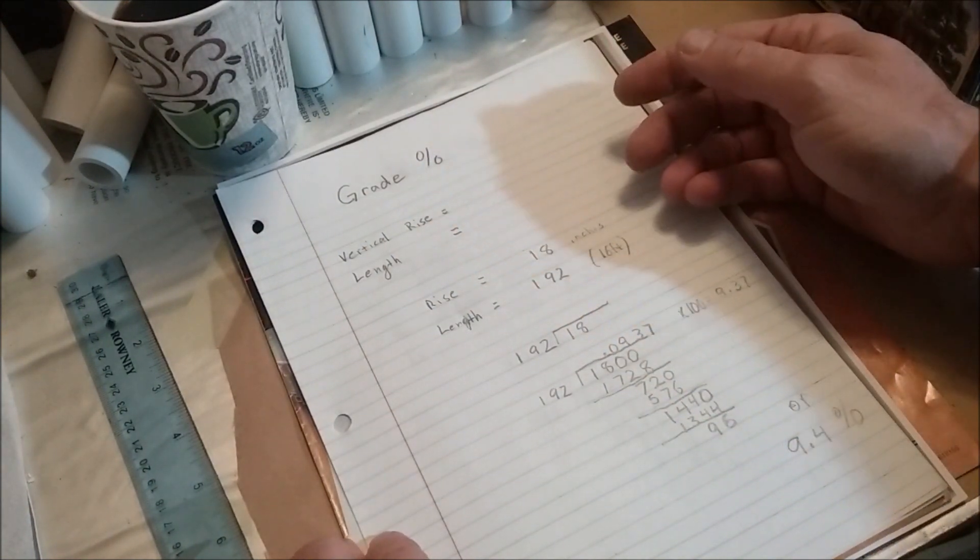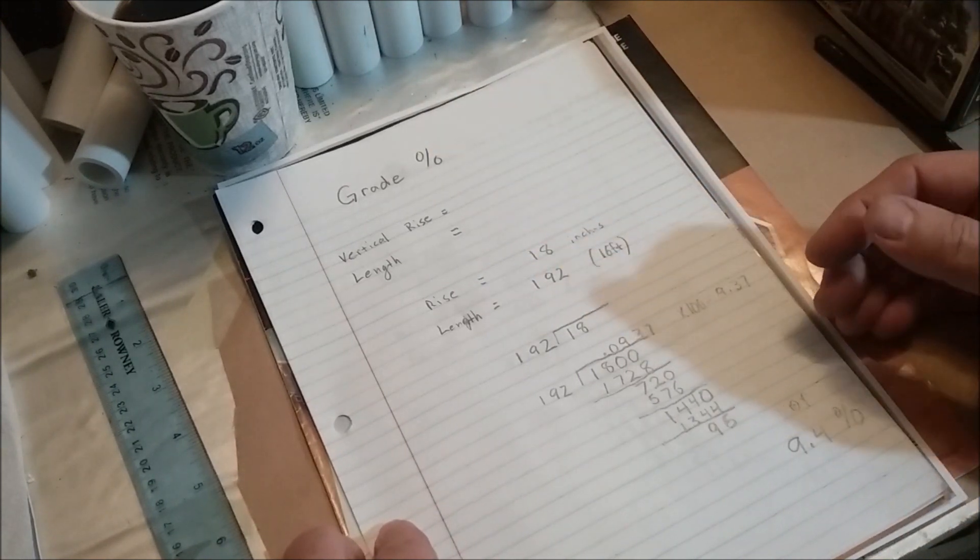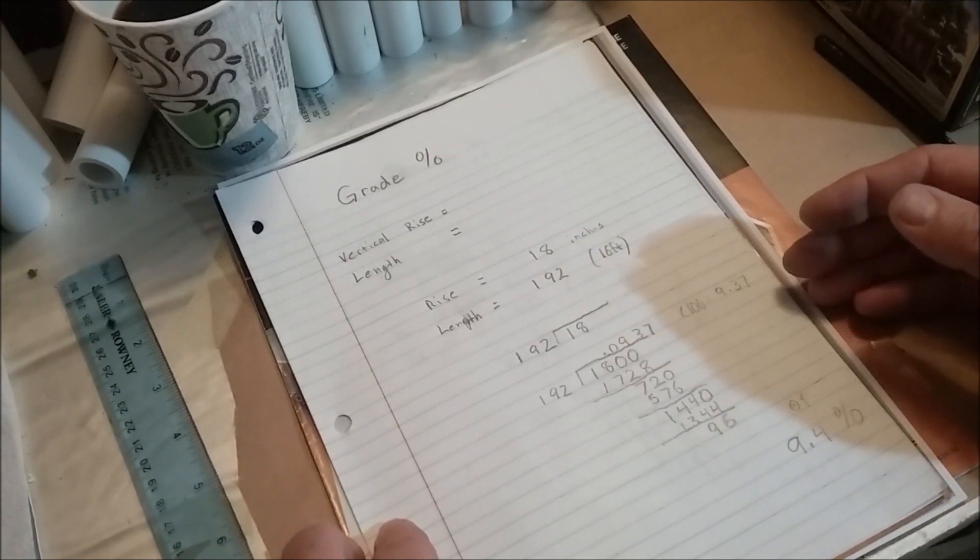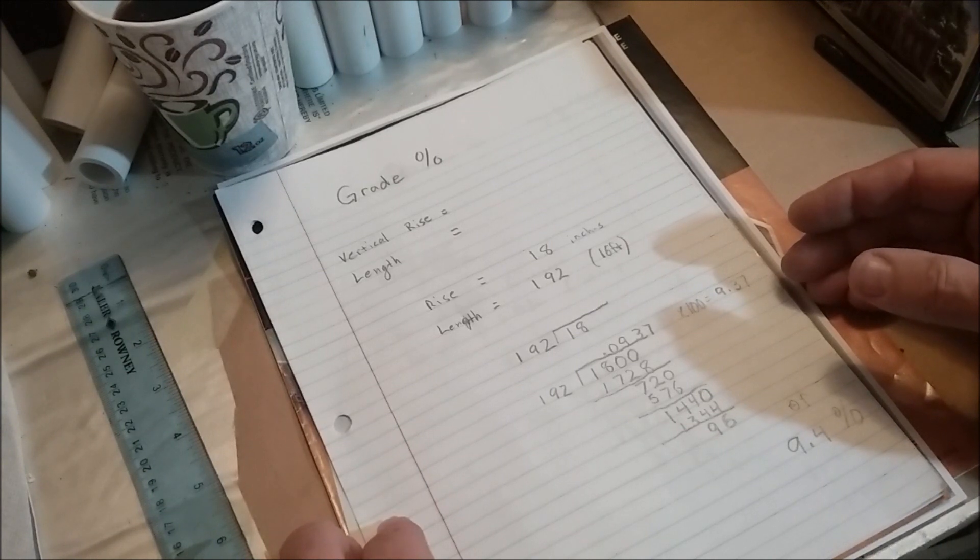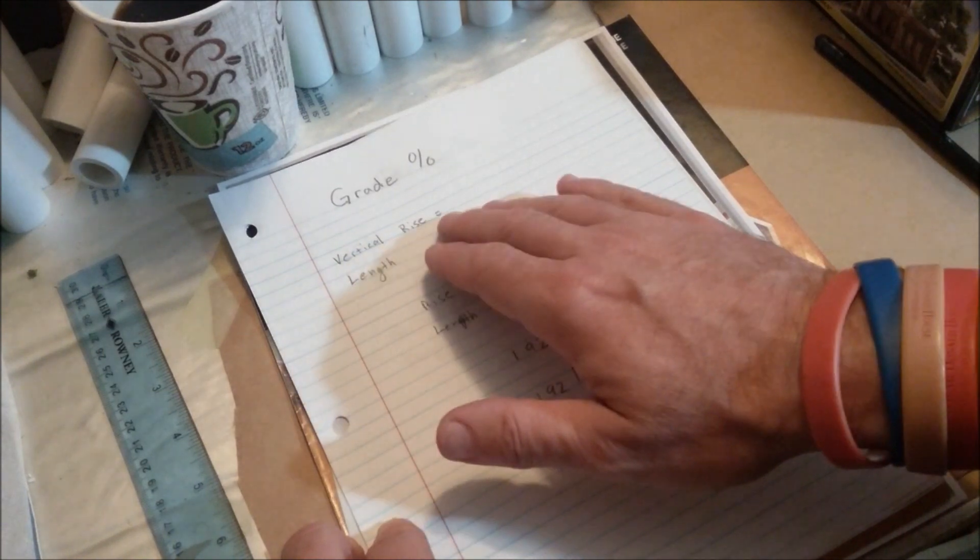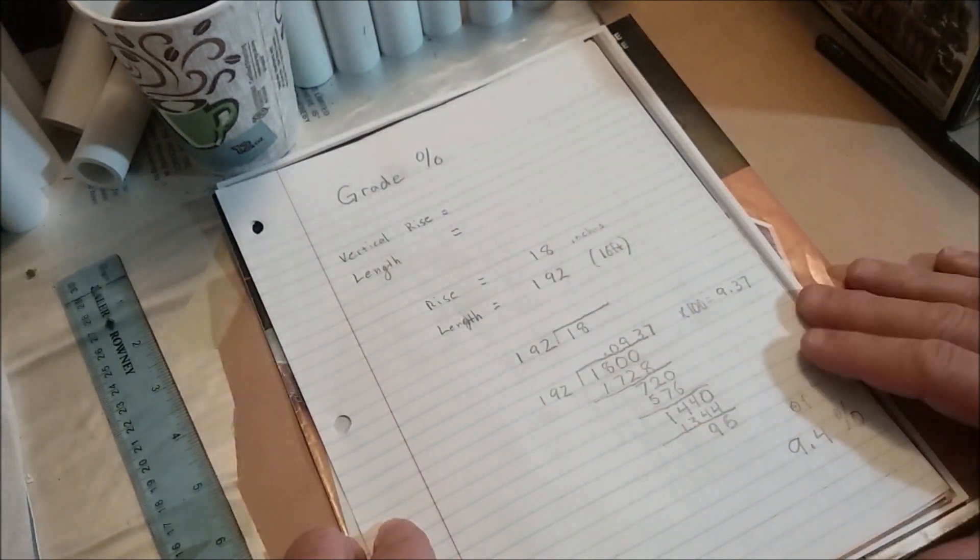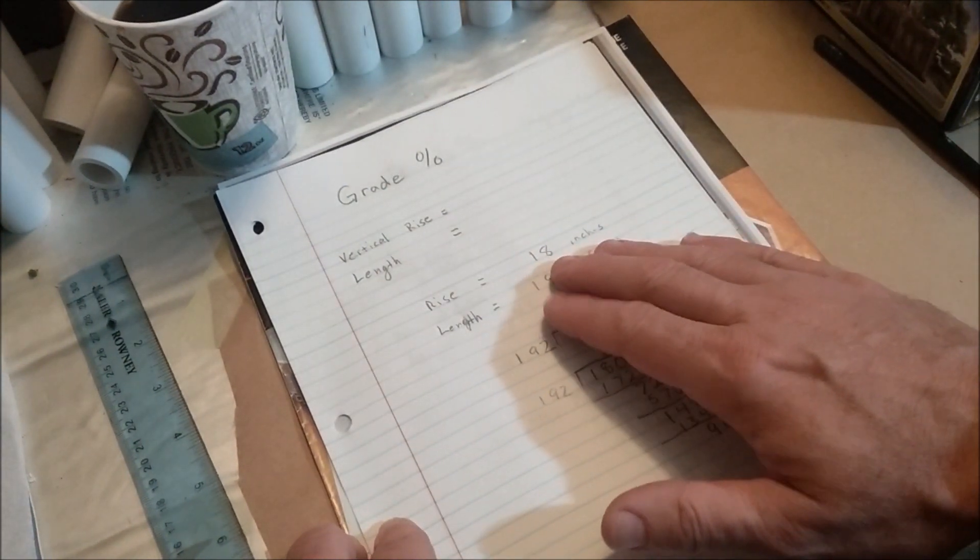Again, if you have a helix and you want to put a double deck track, some of them I've seen, at least for N-scale, have been about 18 inches. I wouldn't go less than 24 myself. But some people, you know, space constraints and everything else. You do the vertical rise and the length. So say you want that foot and a half, 18 inches.